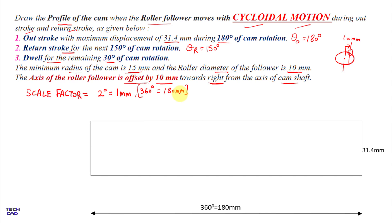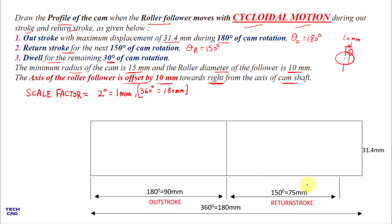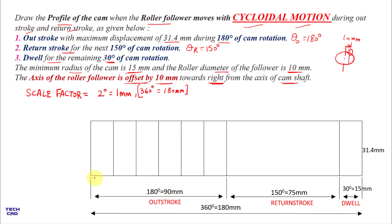Now complete the rectangle. The outstroke of 180 degrees equals 90 mm as per the scale factor — make a vertical line from here. Then the return stroke of 150 degrees equals 75 mm as per the scale factor — make a vertical line. The dwell is 30 degrees which equals 15 mm. Now divide the outstroke into six equal parts, each division being 15 mm, and name them from 0 to 6. In the same way, divide the return stroke into six equal parts.